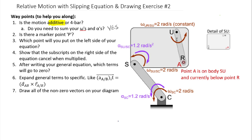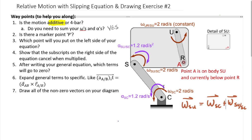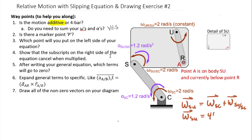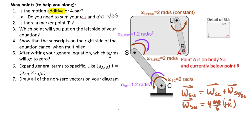Let's find our absolute omega of SU as a vector. It equals omega of SC plus the relative omega of SU relative to SC. From the right-hand rule, the 2 rad/s of SC is positive, plus an additional 2 rad/s positive for the relative omega. So omega of SU as a vector equals 4 rad/s in the positive k-hat direction.